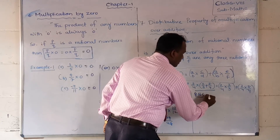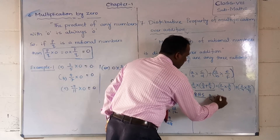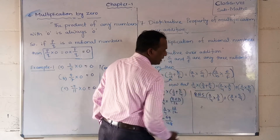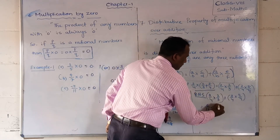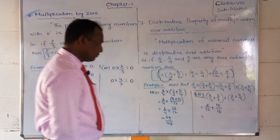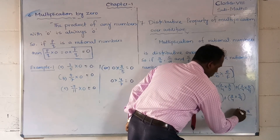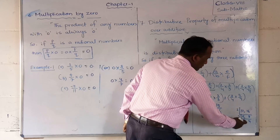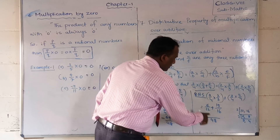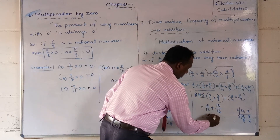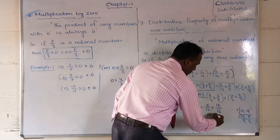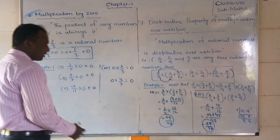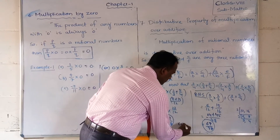For RHS: (3/4 × 2/3) + (3/4 × 5/4). Multiply numerator with numerator and denominator with denominator: 3×2=6 over 4×3=12, plus 3×5=15 over 4×4=16. Now take LCM of 12 and 16: prime factorization gives LCM = 48. So: 48÷12 × 6 = 24, and 48÷16 × 15 = 45. RHS = (24+45)/48 = 69/48.